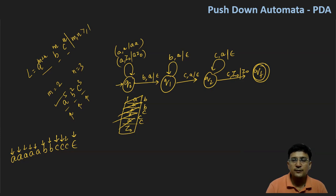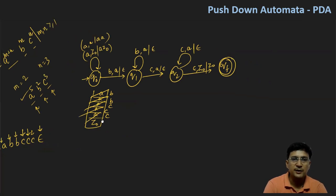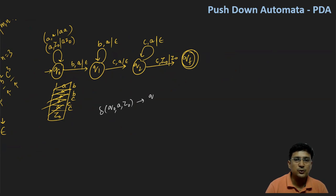Now let us define the transition functions. In exams, questions about PDA require transition functions to be formally defined. The first transition: in state q0, with input 'a' and stack top Z0, we move to q0 and push A onto the stack, so the stack symbols become A, Z0.